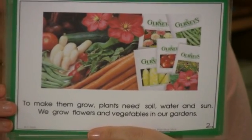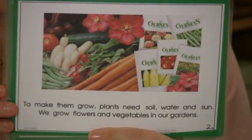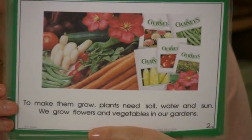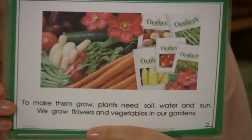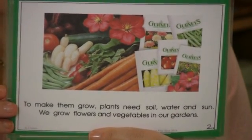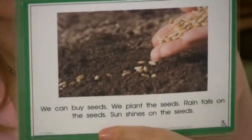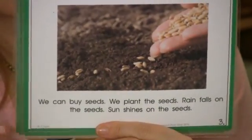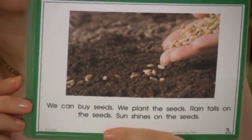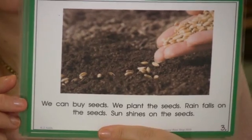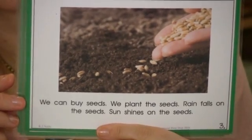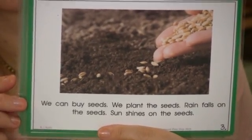For instance, to make them grow, plants need soil, water, and sun. We grow flowers and vegetables in our garden. We can buy seeds, we plant the seeds, rain falls on the seeds, sun shines on the seeds.